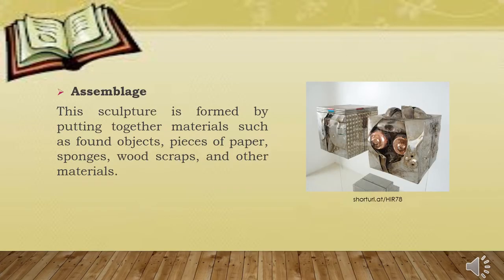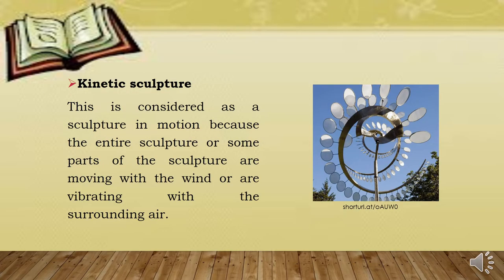Assemblage. This sculpture is formed by putting together materials such as found objects, pieces of paper, sponge, wood scraps, and other materials. Kinetic sculpture. This is considered a sculpture in motion because the entire sculpture or some parts of the sculpture are moving with the wind or are vibrating with the surrounding air.